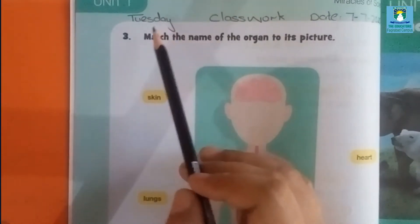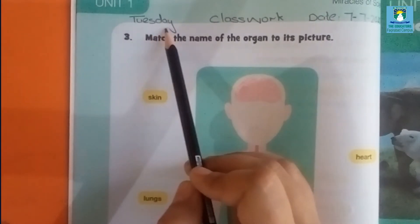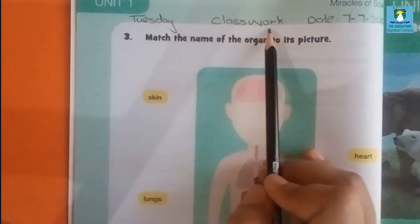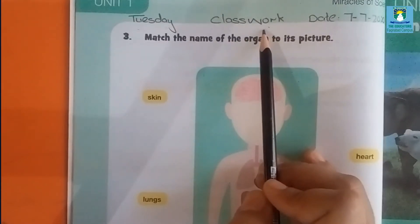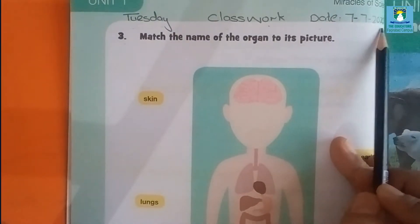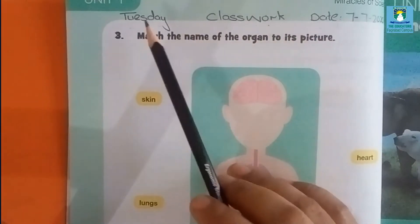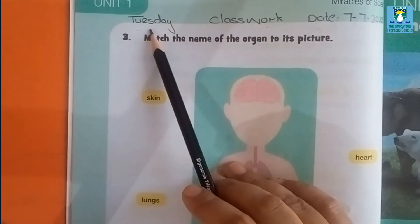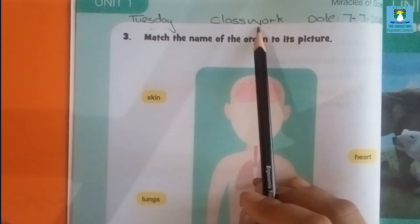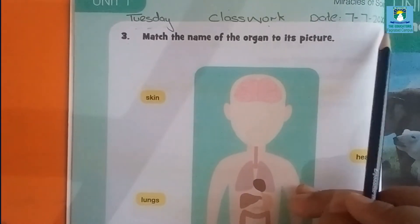Before starting this question, first of all write the day. Day is Tuesday. Write class work. Date is 7th July 2020.